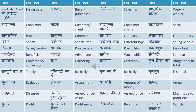Sehmat means agree. Asehmat means disagree. Tay kiya hua mulya means agreed price or value. Price can be translated as either mulya or keemat — you can use two different words. Sehmat keemat means agreed price. Parimaan means magnitude — like magnitude of profit. Munafa means profit. Munafe ka antar means profit margin.